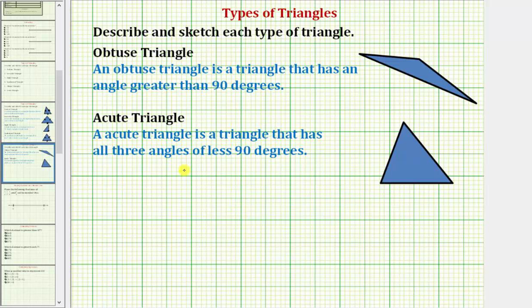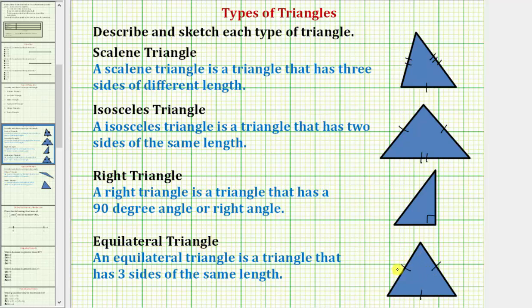It is possible for one triangle to have more than one description. For example, this is an acute triangle because each angle measures less than 90 degrees, but an equilateral triangle also has all angles less than 90 degrees — so all equilateral triangles are also acute triangles. Similarly, a right triangle can also be a scalene triangle if it has three sides of different lengths. It is important to recognize that a single triangle can be classified as more than one type of triangle.